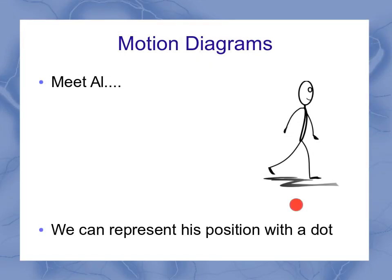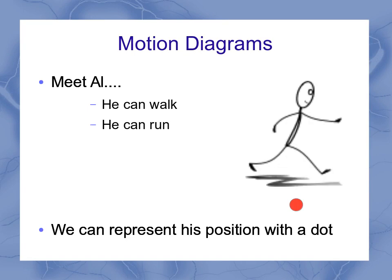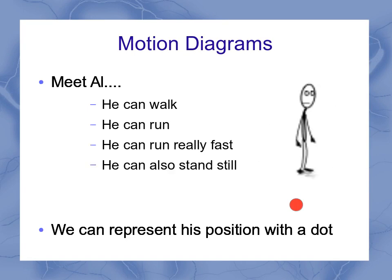So to help with this, I want you to meet Al. Al can walk. He can run. He can run really fast. He can even stand still. But no matter where Al is, we're going to represent his position with a dot.